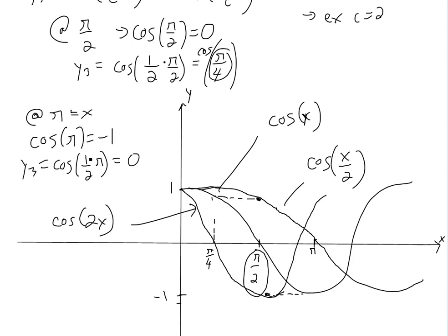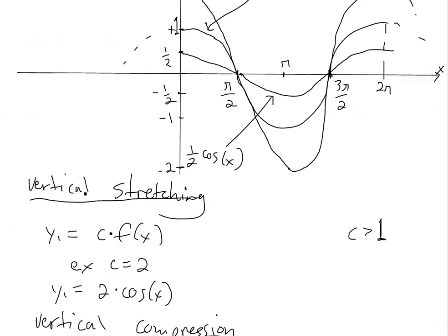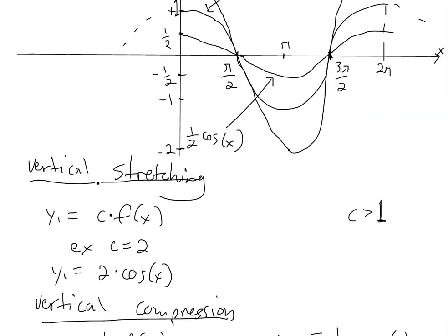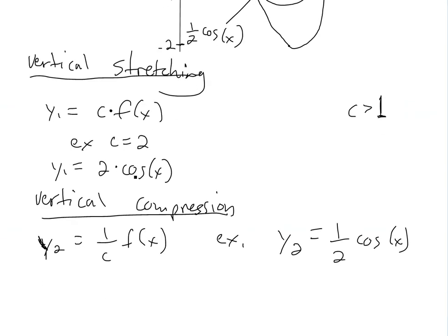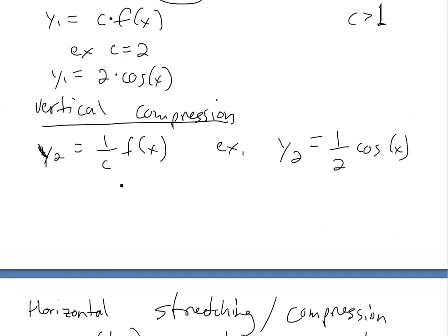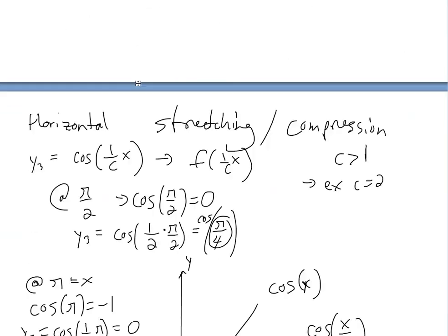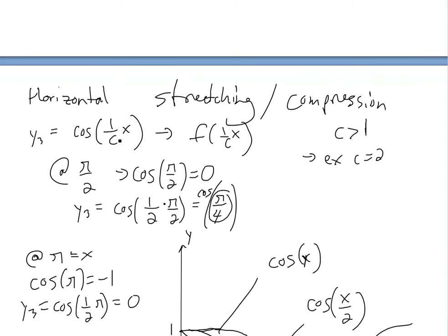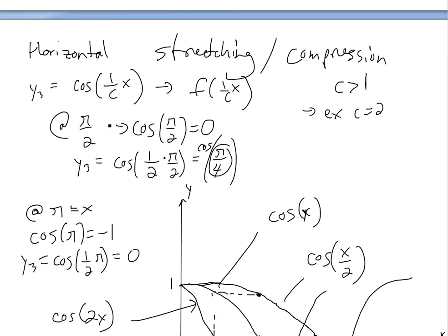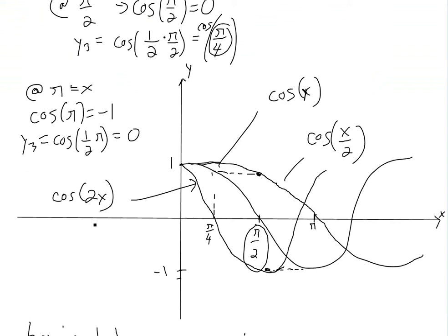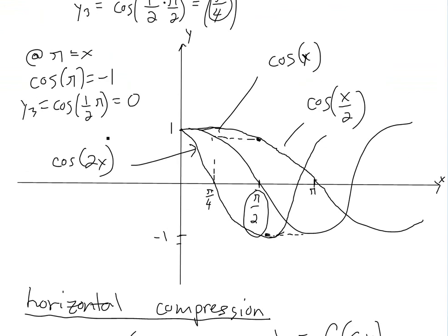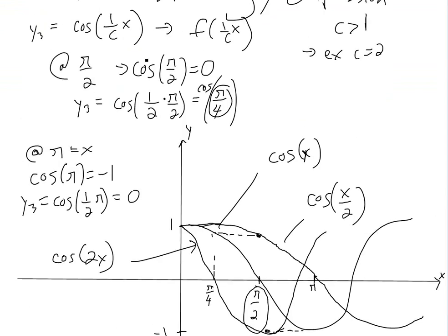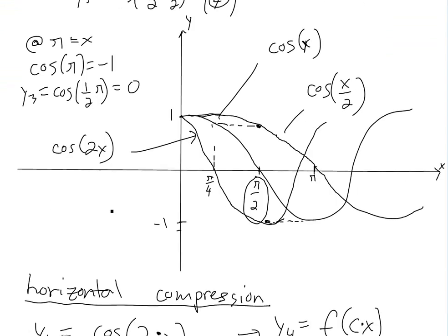So basically, this is similar to the vertical case. For vertical: c times cos x is stretching, and 1 over c times cos x is compression. But inside the brackets it's the opposite: 1 over c times x is stretching, and c times x is compression.